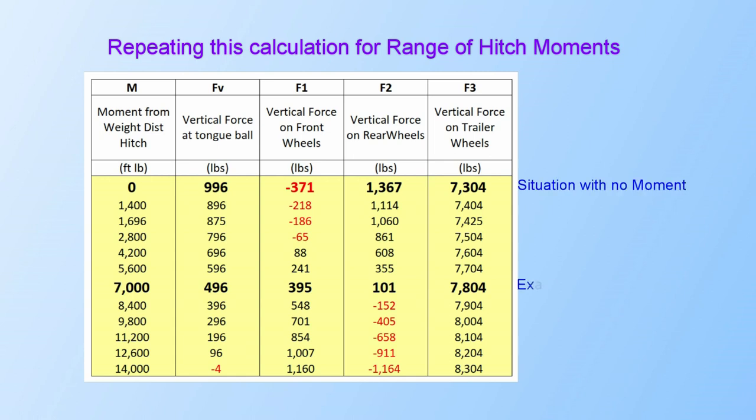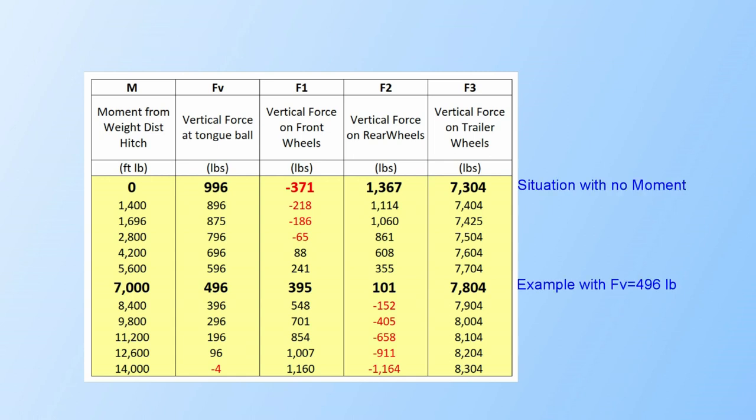The top line is the situation without any tension on the weight distribution system. The second highlighted line is the example we have looked at.